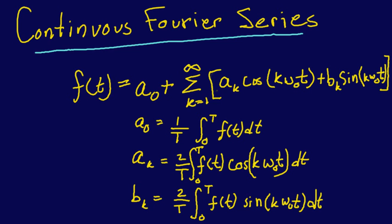So, for example, if we had a square wave, we could represent that with a series of sines and cosines. Now, the general form of this is f(t) is equal to a_0, this constant a_0, plus the sum from k equals 1 to infinity of a_k cosine(k ω_0 t) plus b_k sine(k ω_0 t).